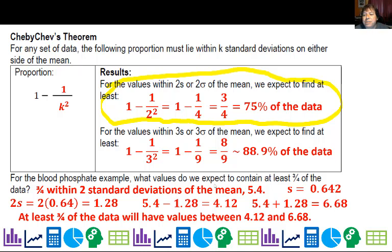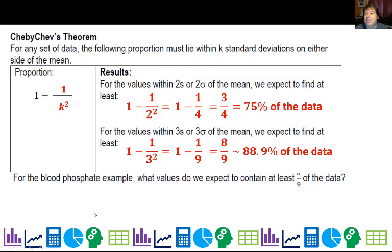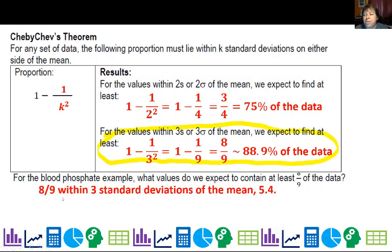Now I can do the same thing again for eight ninths of the data because that's the three s or three sigma rule. And what I'll do is again, remember the eight ninths is within three standard deviations of the mean.